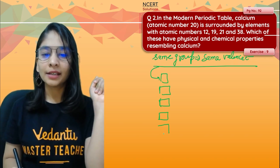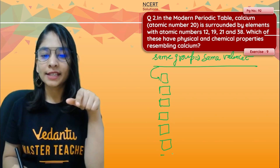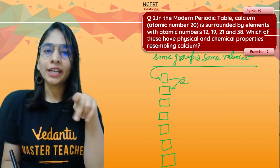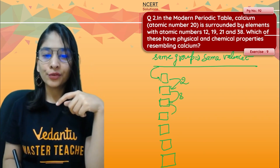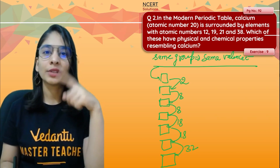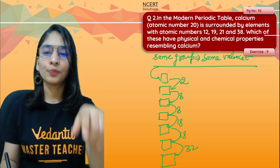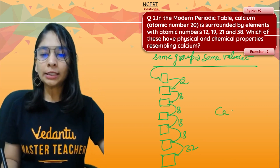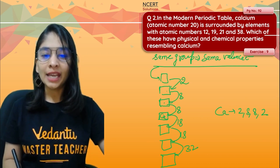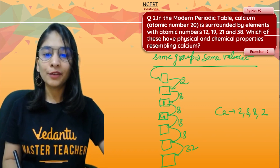Here is an easy way to decide same group elements: when placing elements in a group, the difference in atomic numbers follows a pattern — between the 1st and 2nd periods it is 2, then 8, then 8, then 18, then 18, then 32. Calcium has configuration 2, 8, 8, 2 — four shells, placed in the 4th period. The element before calcium in the same group would have an atomic number 8 less, which is 12 — that is magnesium, with configuration 2, 8, 2.